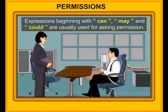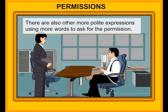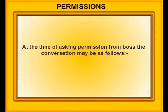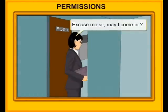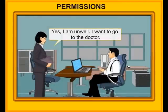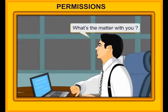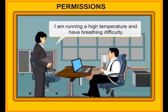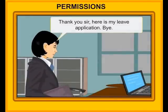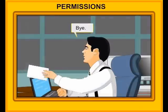Permissions. Expressions beginning with can, may and could are usually used for asking permission. There are also more polite expressions using more words to ask for permission. At the time of asking permission from the boss, the conversation may be as follows. Excuse me, sir. May I come in? Of course. How can I help you? I am unwell. I want to go to the doctor. What's the matter with you? I am running a high temperature and have breathing difficulty. Well, you may go now and get well soon. Thank you, sir. Here is my leave application. Bye. Bye. Take care.